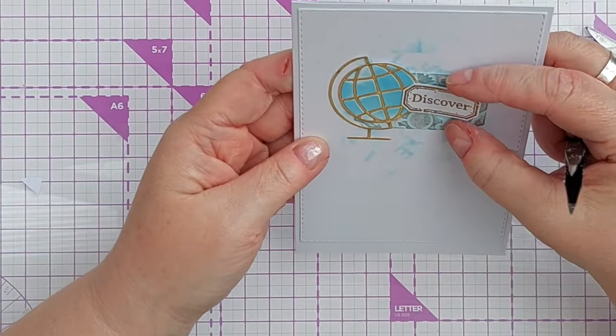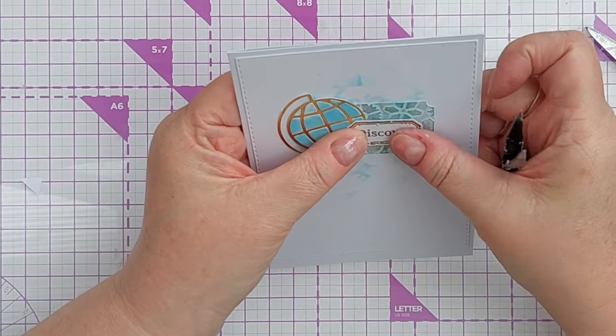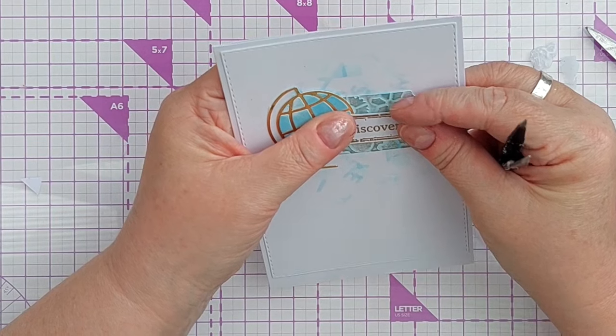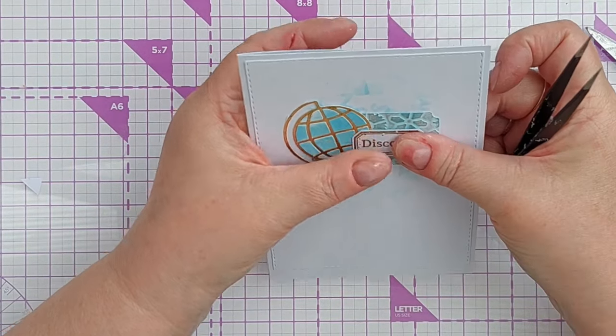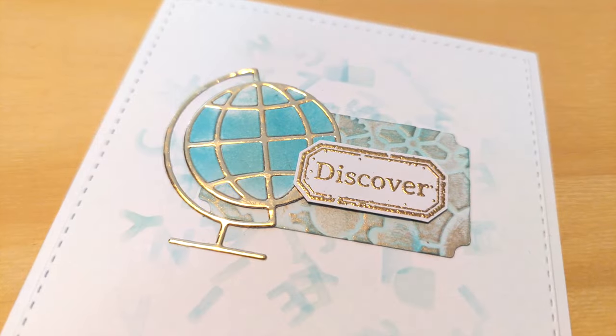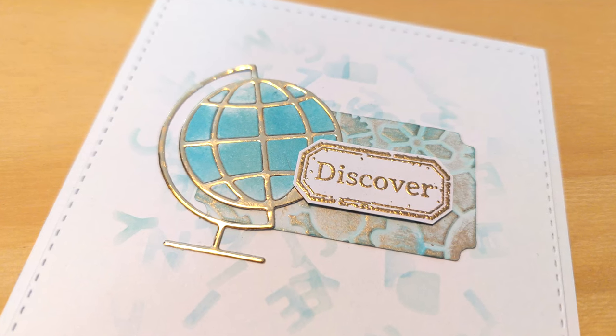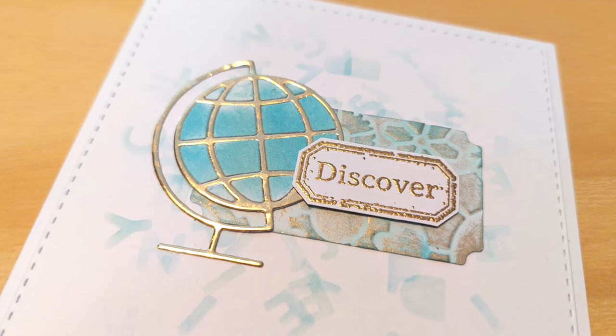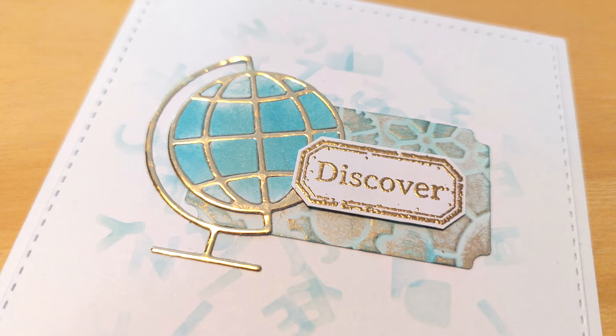So I do hope you've enjoyed the video and it's given you another idea of something you can do with the alphabet dies you already have in your stash. If it has, please do leave a thumbs up, let me know in the comments, and I will see you back here very soon. Thanks for watching, bye for now!